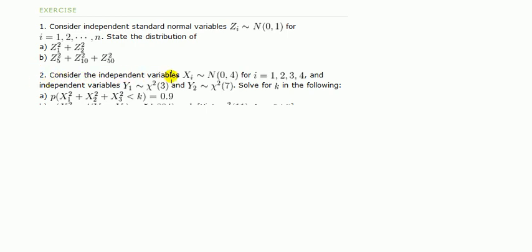Consider the independent variables Xi which are normally distributed with mean of 0 and variance 4. Notice straight away we are no longer dealing with a standard normal. The problem is to solve for k in this expression: probability that X1² + X2² + X3² less than k equals 0.9.